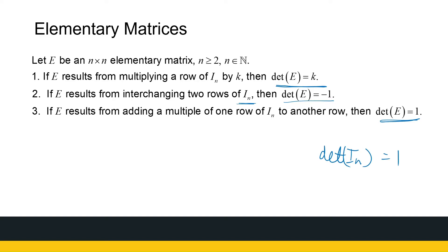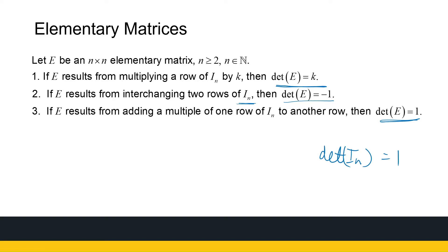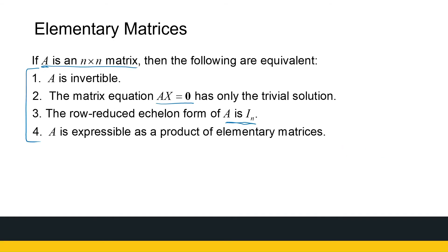That gets us to the next theorem. The determinant of E times matrix B is the determinant of E times the determinant of B, which makes sense given other properties we have of determinants. We need that to get to the last theorem on this page. The other very powerful one is: A is invertible if and only if the determinant of A is non-zero. We need the elementary matrices to prove that — that's why it's only introduced here.